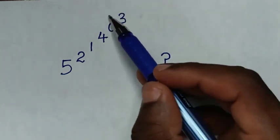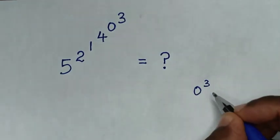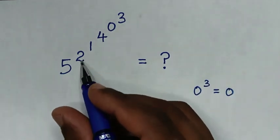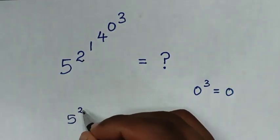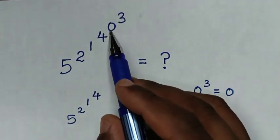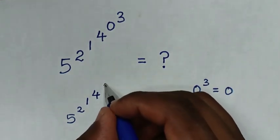From the top powers, it is 0 power of 3. 0 power of 3 is equal to 0. So it will be 5 power of 2, then power of 1, then power of 4. From here, 0 power of 3 is 0, so we substitute here 0.